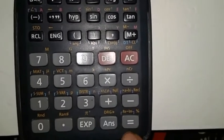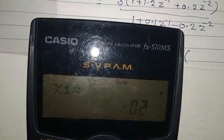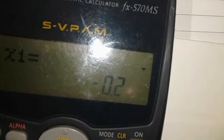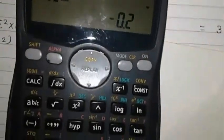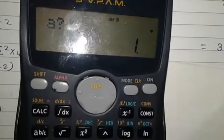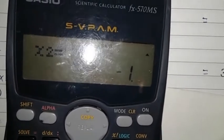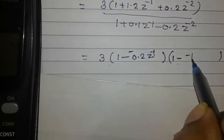Then we choose equal to. We choose the first term: x1 is equal to minus 0.2. If we choose a factor, we choose 1 minus 0.2, which equals 0.2: 1 minus minus 0.2 Z-inverse. That's why we choose the second value: x1 is equal to minus 1. We choose the second value: 1 minus minus 1, minus is equal to minus 1 into Z-inverse.